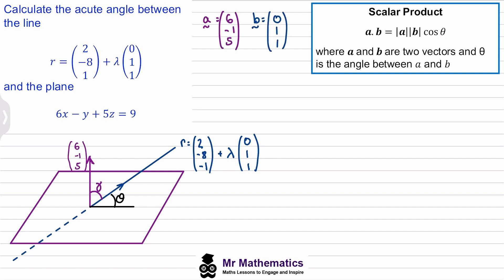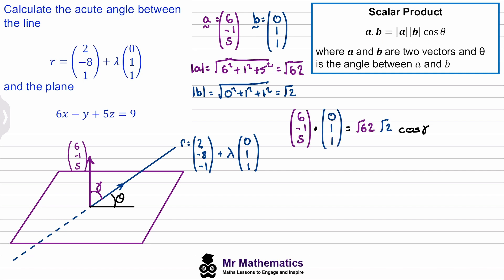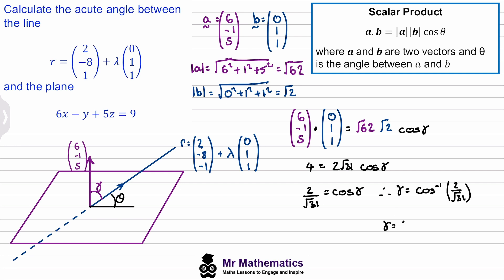So we've got vectors A and B. Now we need to find our magnitudes. We've got the magnitude of vector A as 6 squared, 1 squared and 5 squared, which gives us root 62. We'll do the same for vector B and we get the square root of 2. Now we'll substitute each of these into our scalar product and dot the two vectors together. We've got 0 minus 1 plus 5, which gives us 4. We'll multiply root 62 by root 2 together and we get 2 root 31. And this is cos alpha. Then we'll divide both sides by 2 root 31 and take the arc cos of both sides. This gives us alpha as 68.9 degrees.